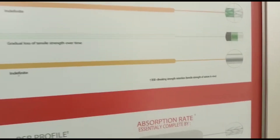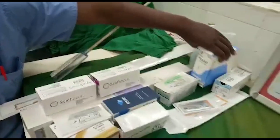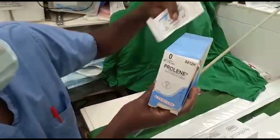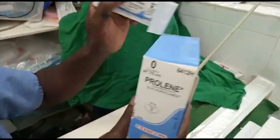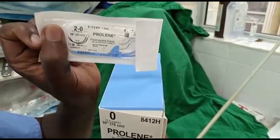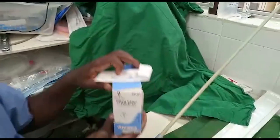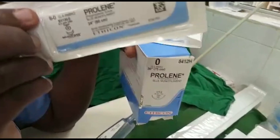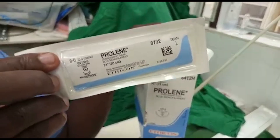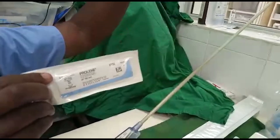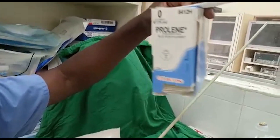Here are some physical examples of sutures. These are Prolene sutures in different sizes: we have zero, two-zero, and eight-zero. Looking at them, eight-zero is the smallest and zero is the largest in Prolene sutures.